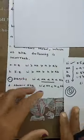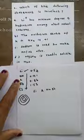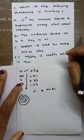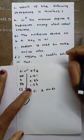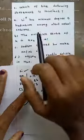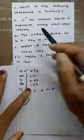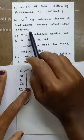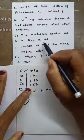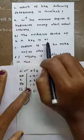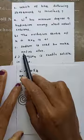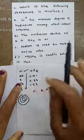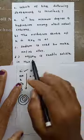Now see the second question: Which of the following statement is incorrect? This is also a negative type of question. See the options one by one: (A) Li+ has minimum hydration among alkali metal cations; (B) oxidation state of potassium in KO2 is +1; (C) sodium is used to make sodium-lead alloy; (D) MgSO4 is readily soluble in water.